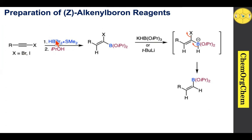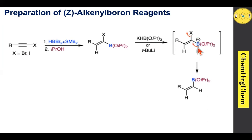For preparation of Z-alkenyl boron reagents: an alkynyl halide reacts with dibromoborane followed by isopropanol to produce the boronate species. This is then treated with potassium isopropoxyborohydride or tert-butyllithium to give an intermediate species, where hydride transfer to the center followed by expulsion of the halogen atom produces the corresponding Z-alkenyl boron reagent.